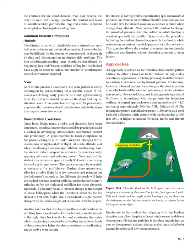Common Student Difficulties - Climbing/Descending Turns. Combining turns with climbs/descents introduces new helicopter attitudes and the initial perception of these attitudes may be difficult for the student to comprehend. A thorough briefing and demonstration minimizes this problem. The first climbing/descending turns should be established by beginning the climb/descent and then rolling into the desired bank angle to reduce simultaneous control movements required. During early practice, the instructor should call out all items that require attention, even if no correction is required; as proficiency improves, call attention only to items requiring corrective action.